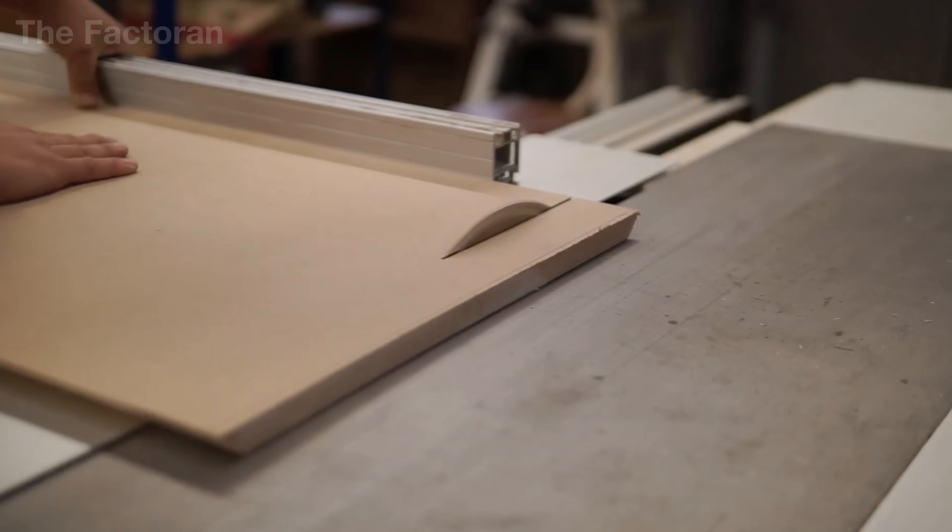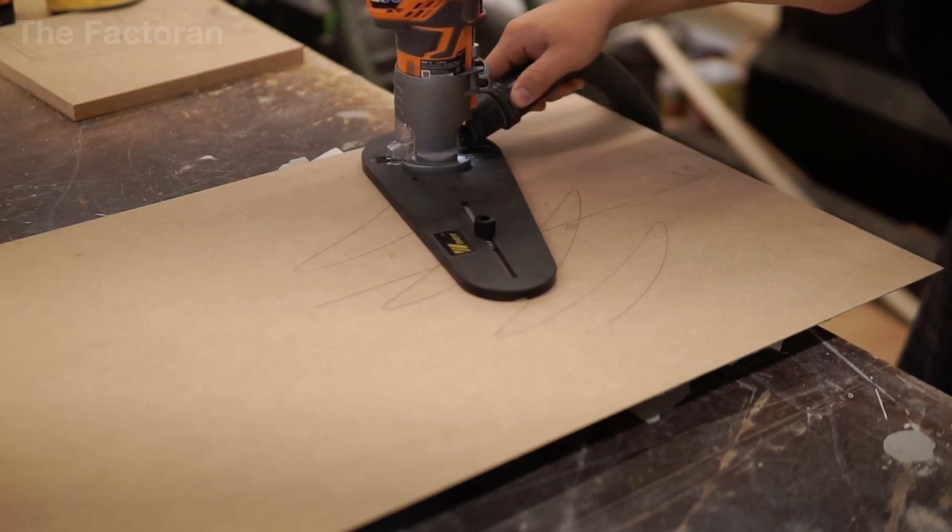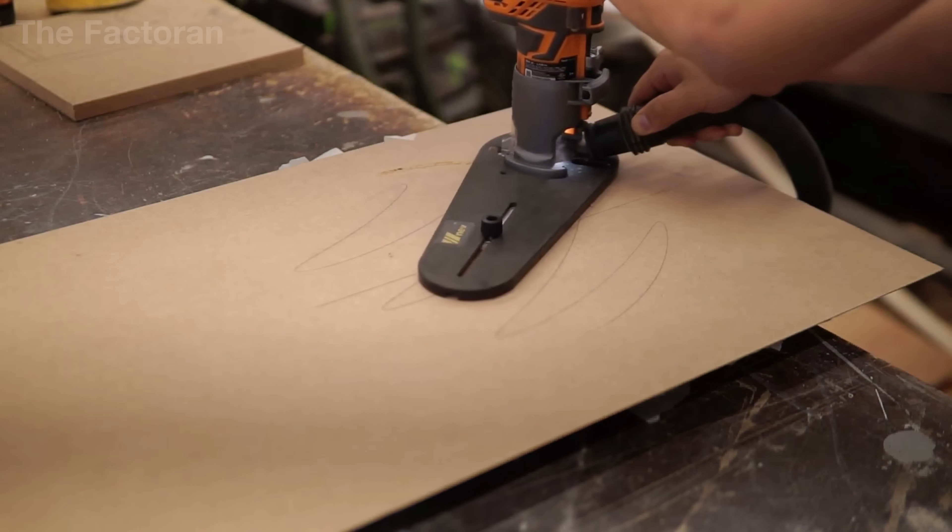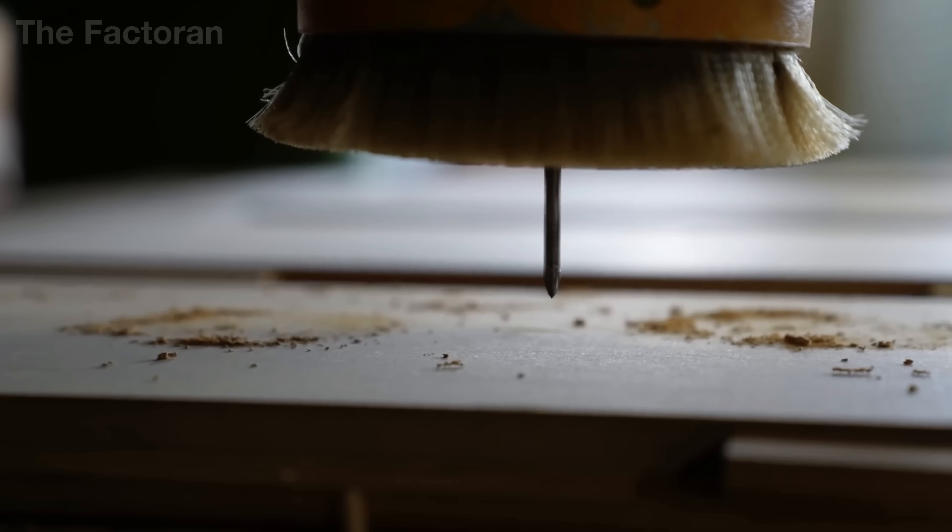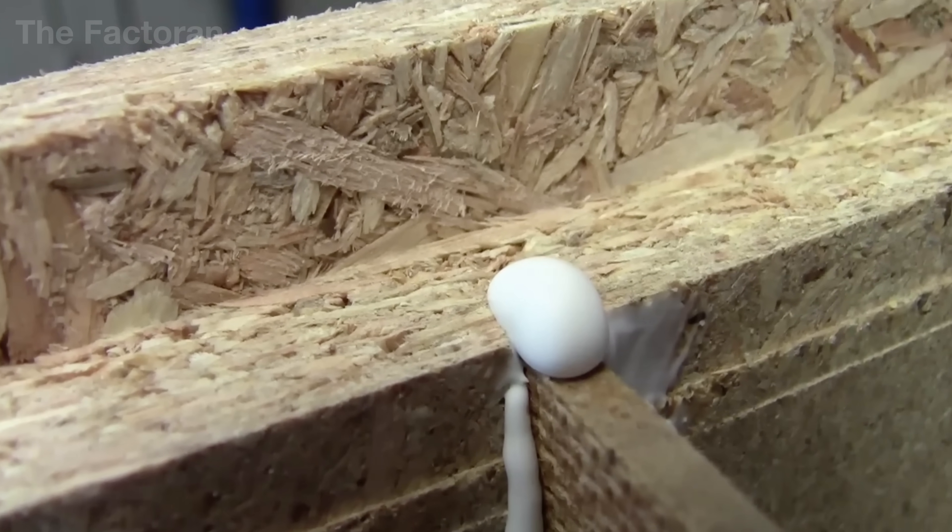Once shaped, each panel moves to assembly, where industrial adhesives and mechanical fasteners work together. Adhesive bonds the surfaces, while screws reinforce structural rigidity, ensuring the cabinet can withstand continuous vibration at high playback levels.